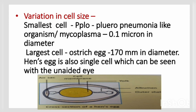Not just the ostrich egg, but the eggs of all birds represent a single cell. As seen in the picture, the cross-section of a hen's egg is also unicellular. We can see the cell membrane, air sac, outer shell, and the yellow yolk surrounded by a transparent white jelly-like fluid called albumin. The albumin and yolk represent reserved food material in the cytoplasm.